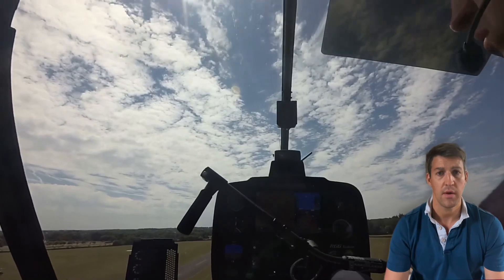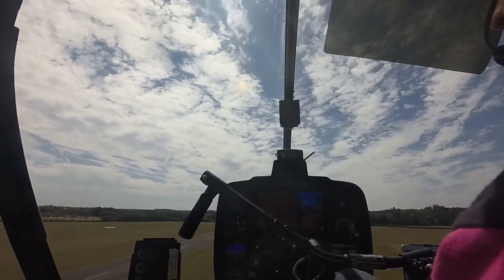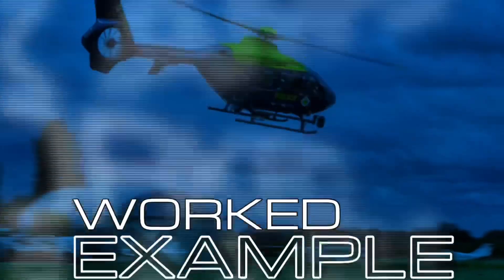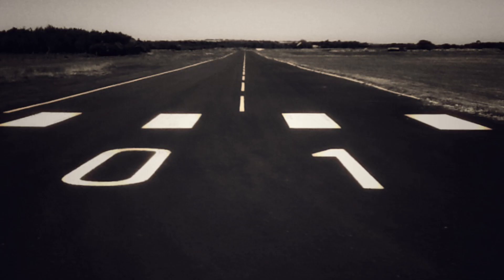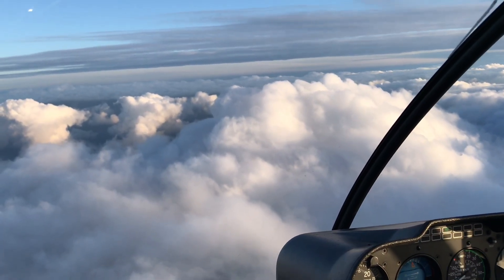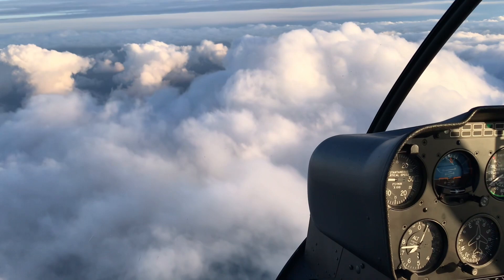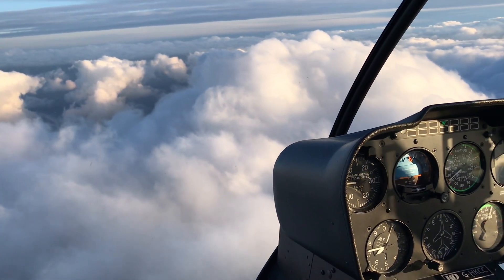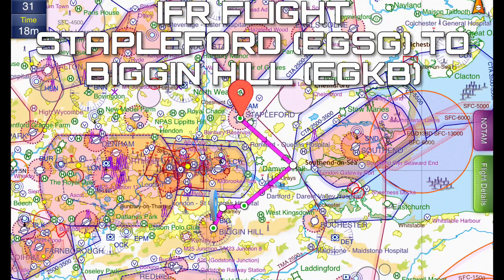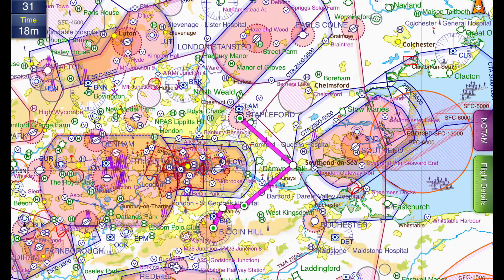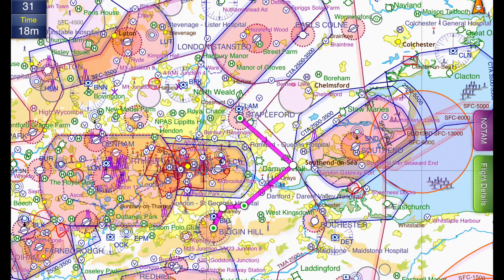Now let's use a real world weather scenario as a worked example, using the weather on the 2nd of August 2023. We will only focus on the IFR weather considerations alone. This is an IFR flight from Stapleford to Biggin Hill, departing at approximately 1430 and arriving at Biggin around 1500. Not a long flight, but we'll assume we can't get a direct clearance into London controlled airspace, so the routing goes via an indirect waypoint to the east.